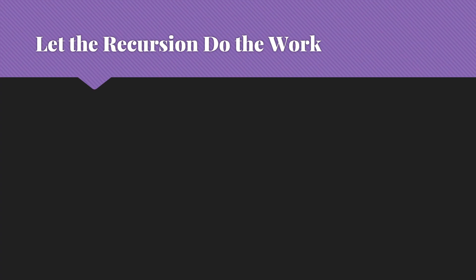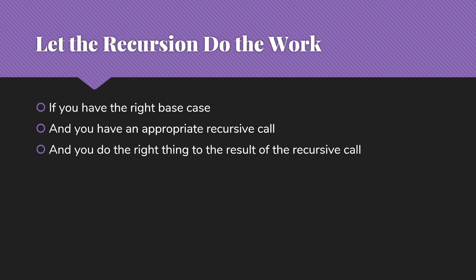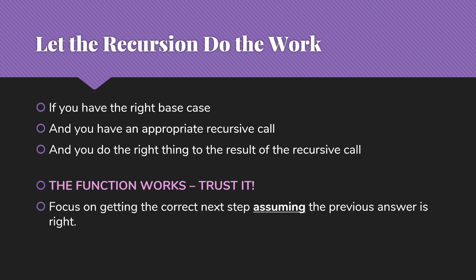Which leads me to my next piece of advice. Let the recursion do the work. You're writing a recursive function so that the recursion can get the job done. If you have the right base case, so if you've correctly identified this is the base case, this is the right thing to do in that case. And if you have an appropriate recursive call that is moving you toward that base case, and you do the right thing to the result of that recursive call, the function works. So trust that. Focus on getting the correct next step, assuming that the previous answer is right.